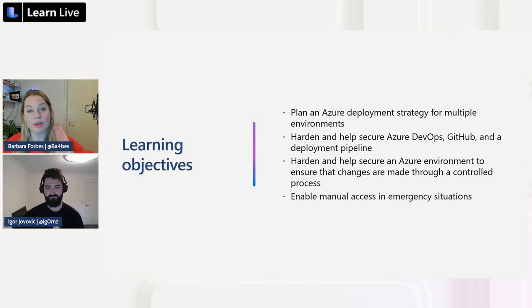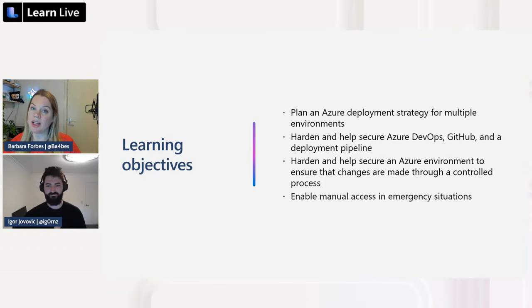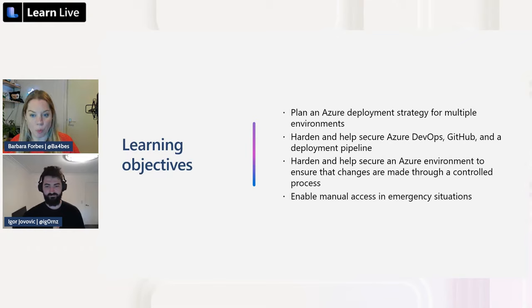Today's objectives: we want to plan an Azure deployment strategy for multiple environments — not just production but also development, staging, and more. We'll talk about hardening and securing Azure DevOps and GitHub pipelines, securing your Azure environment so everything is controlled and done securely, and finally how to enable manual access in an emergency.